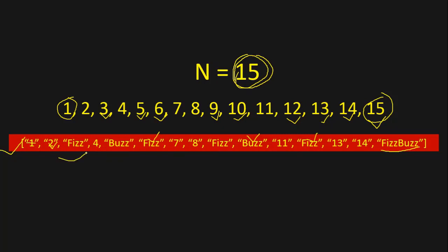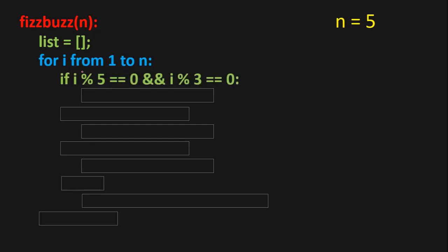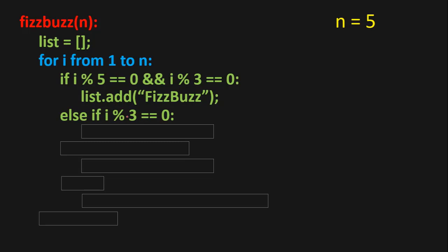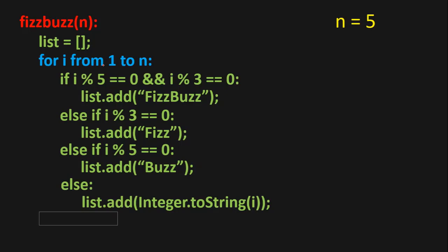Now let's see how the solution looks in code. First I'm going to declare a function FizzBuzz that takes a number as input. We declare an empty list, then run a loop for i from 1 to N. First we check if i is a multiple of both 5 and 3, then we add 'FizzBuzz'. If i is a multiple of 3, we add 'Fizz'. If i is a multiple of 5, we add 'Buzz'. Otherwise we convert i to a string and add it to our list. At the end we return the list.